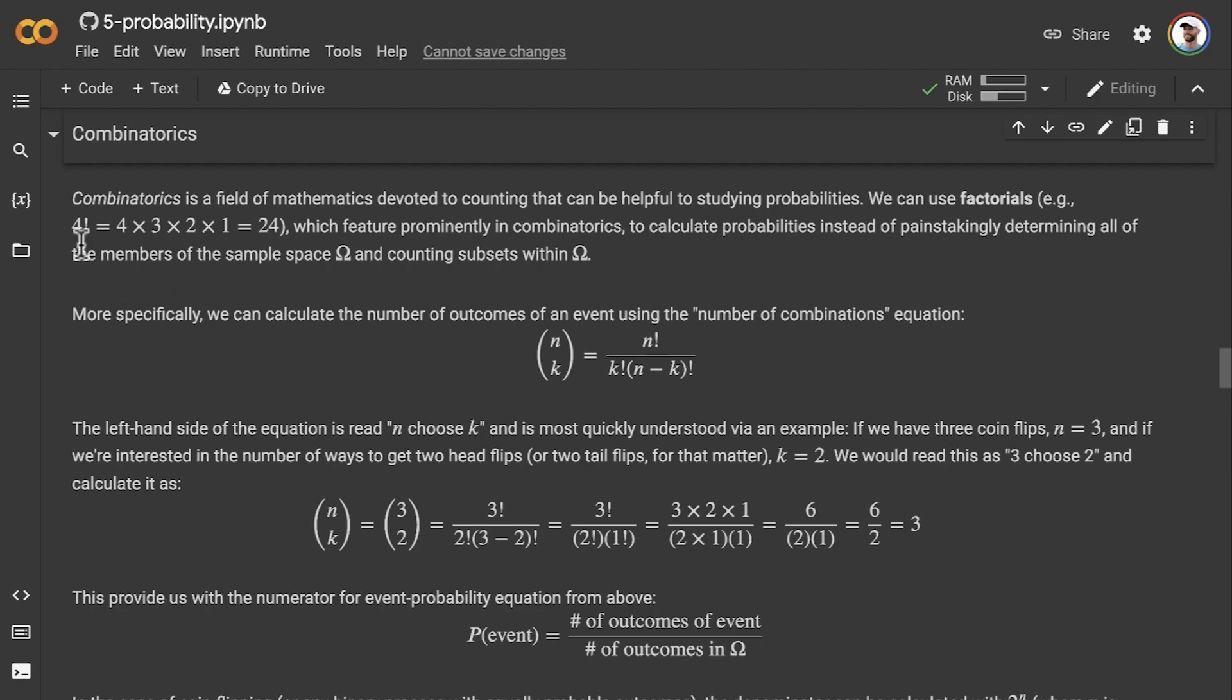If it was 3 factorial, then it would just be 3 × 2 × 1. 2 factorial is just 2 × 1. 1 factorial is just 1. And 5 factorial, in case it isn't obvious, would be 5 × 4 × 3 × 2 × 1, so it would be 5 × 24, which I believe would come out to 96 on the spot. Yeah, pretty confident about that. So yes, that's what factorials are, and these are very common in combinatorics.